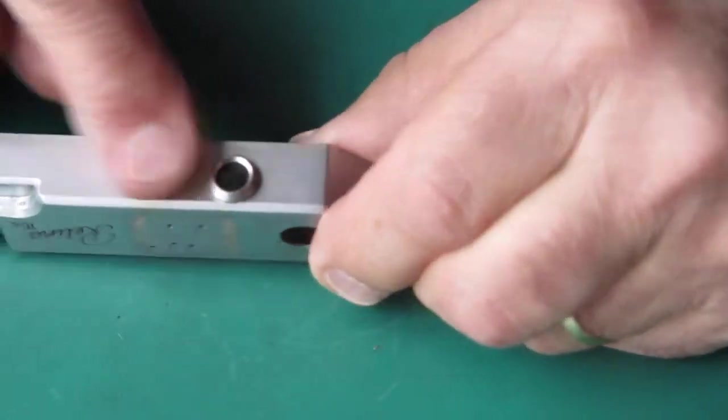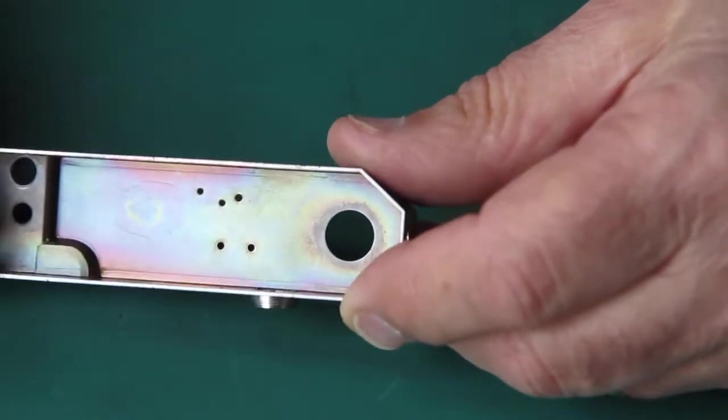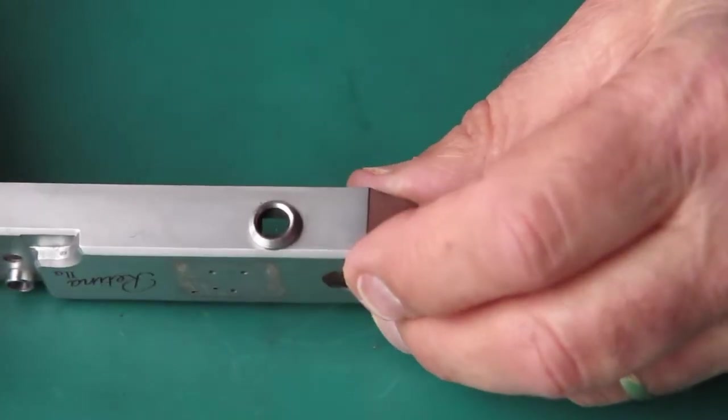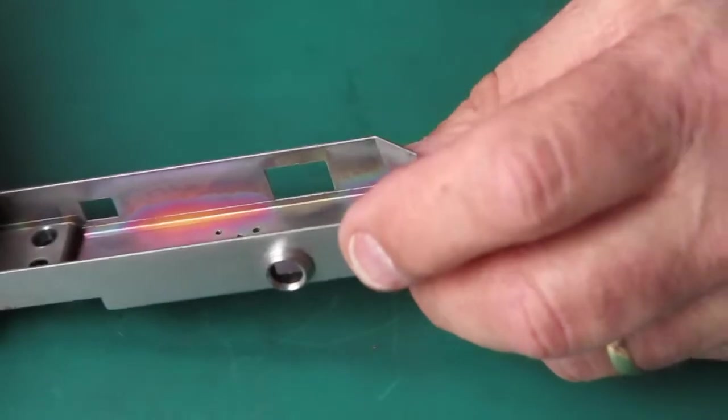The eyepiece at the back, you cannot get that off. Do not attempt to twist that off or do anything else. You'll be buying a lot of trouble. That stays on there. That's got to be cleaned in place.